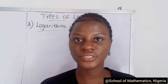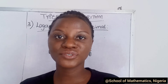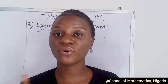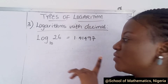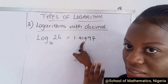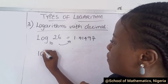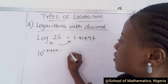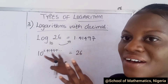Moving on, we have the case of logarithm with decimals. So far we've been doing logarithms dealing with whole numbers, but note that we have cases where you have decimals. For example, log to base 10 of 26 gives a decimal value — that means 10 raised to the power of this value gives you 26, which is approximated.